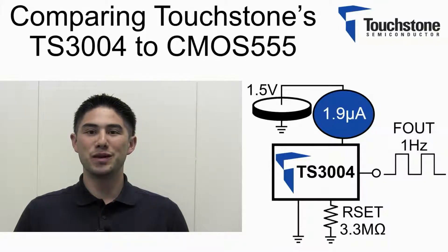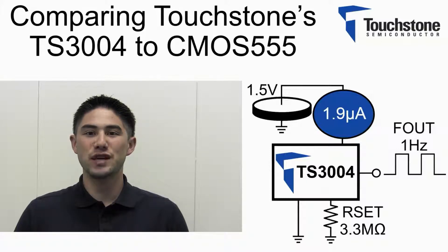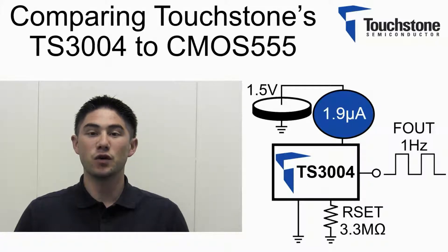Hello, I am Daniel Hannibal, Applications Engineer at Touchstone Semiconductor. In this video, I will compare the supply current of Touchstone's TS3004 timer to a CMOS 555 timer, with an output frequency of 1 Hz. Before comparing the parts side-by-side in the lab, let's first walk through how to set the timer's output frequency.